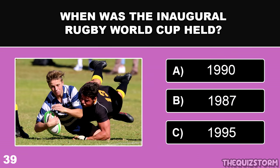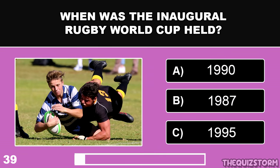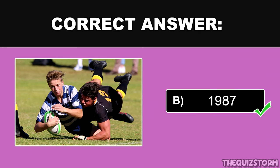When was the inaugural Rugby World Cup held? And the correct answer is 1987.